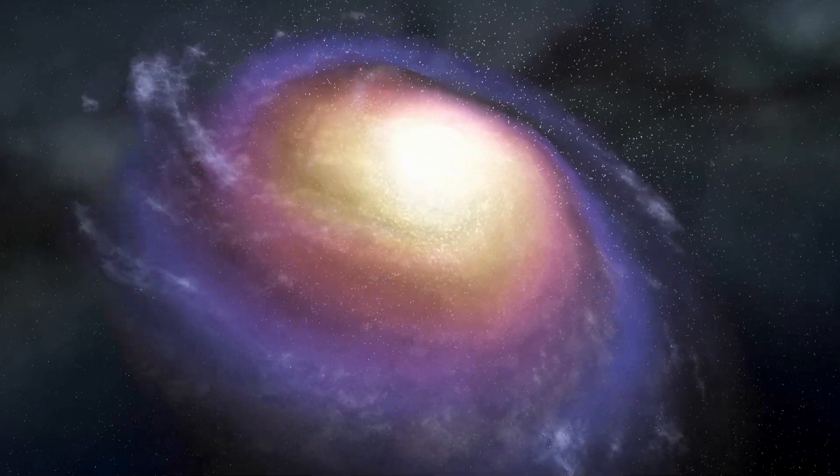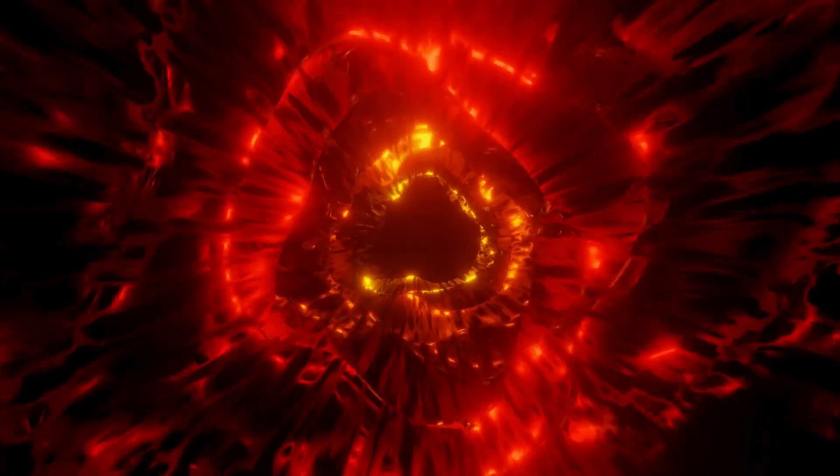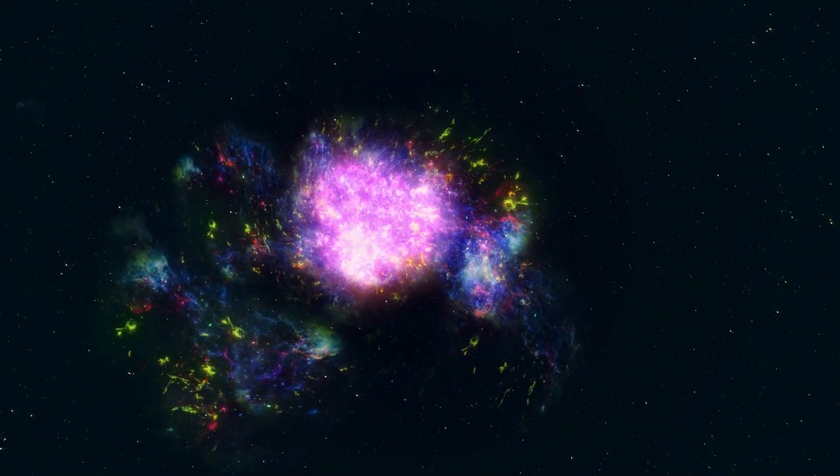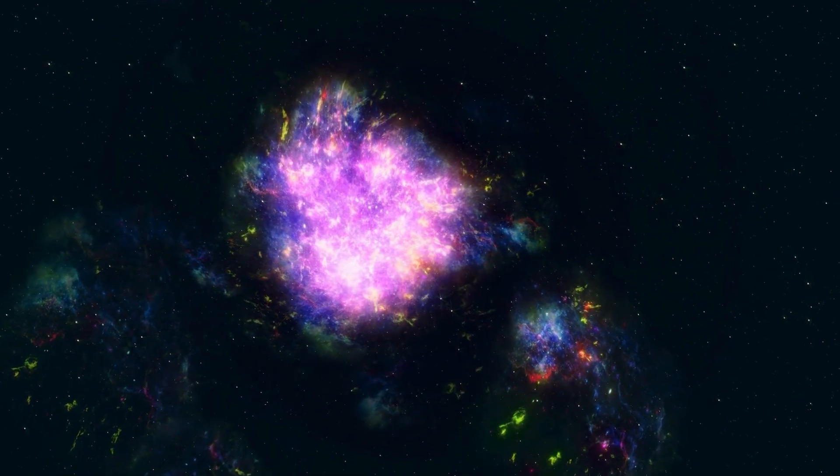Betelgeuse is currently undergoing fusion processes, gradually progressing through various elements like helium, carbon, oxygen, silicon, and iron. As a red giant star, it fuses helium into carbon in its core, a process that takes thousands of years.